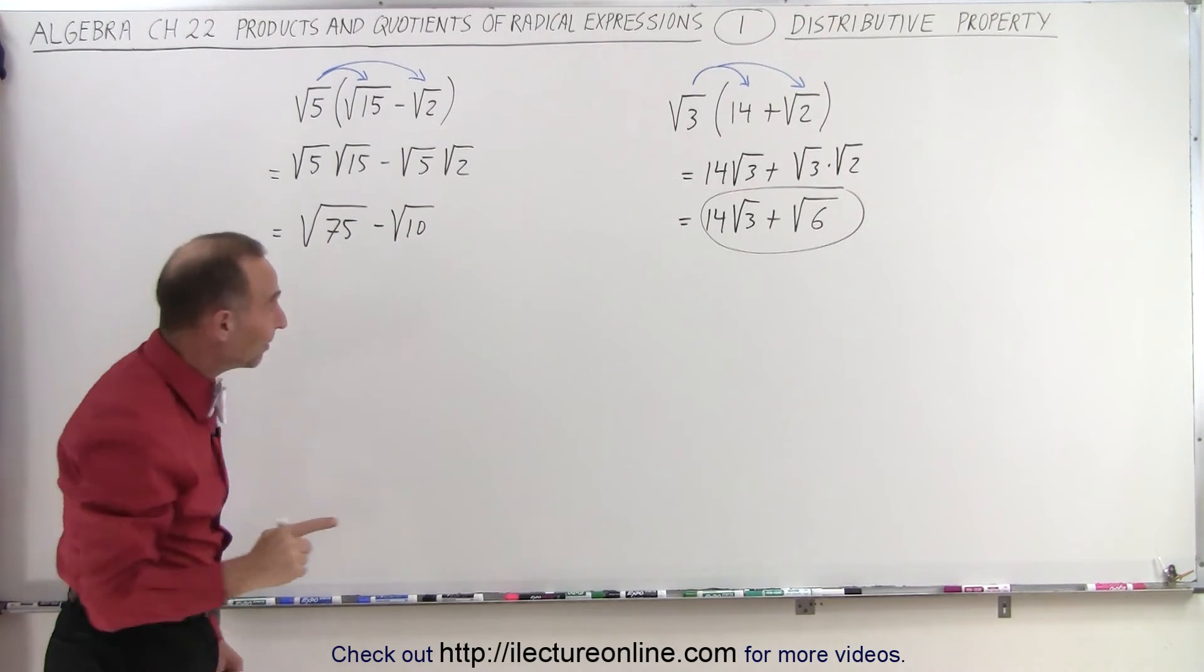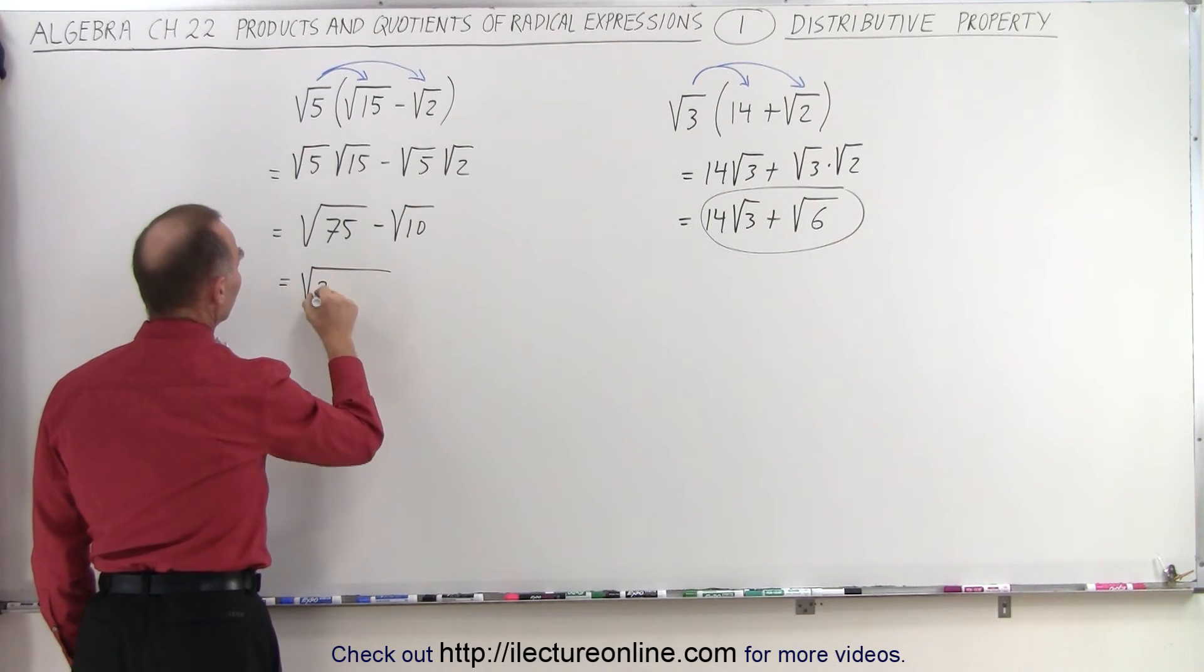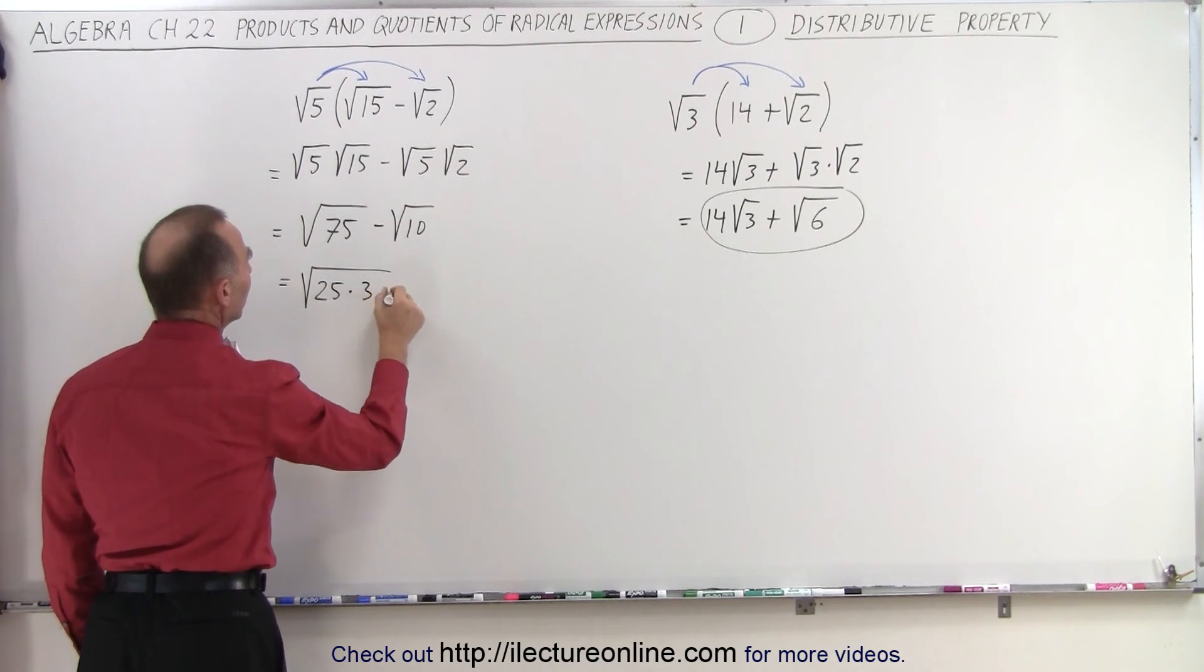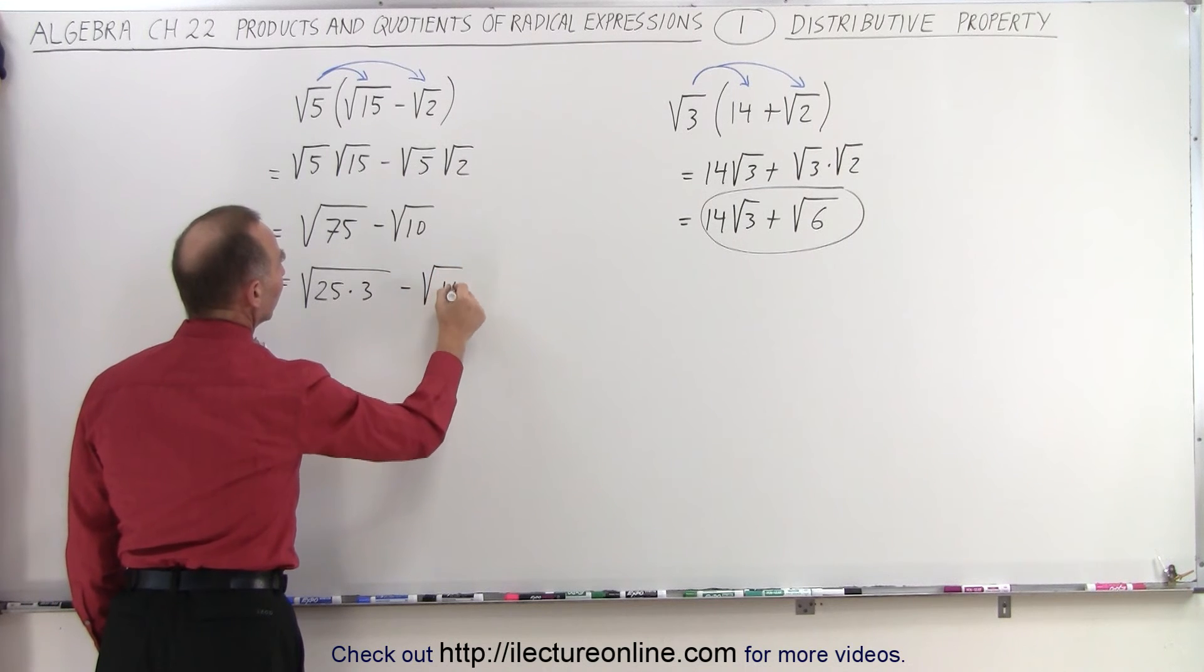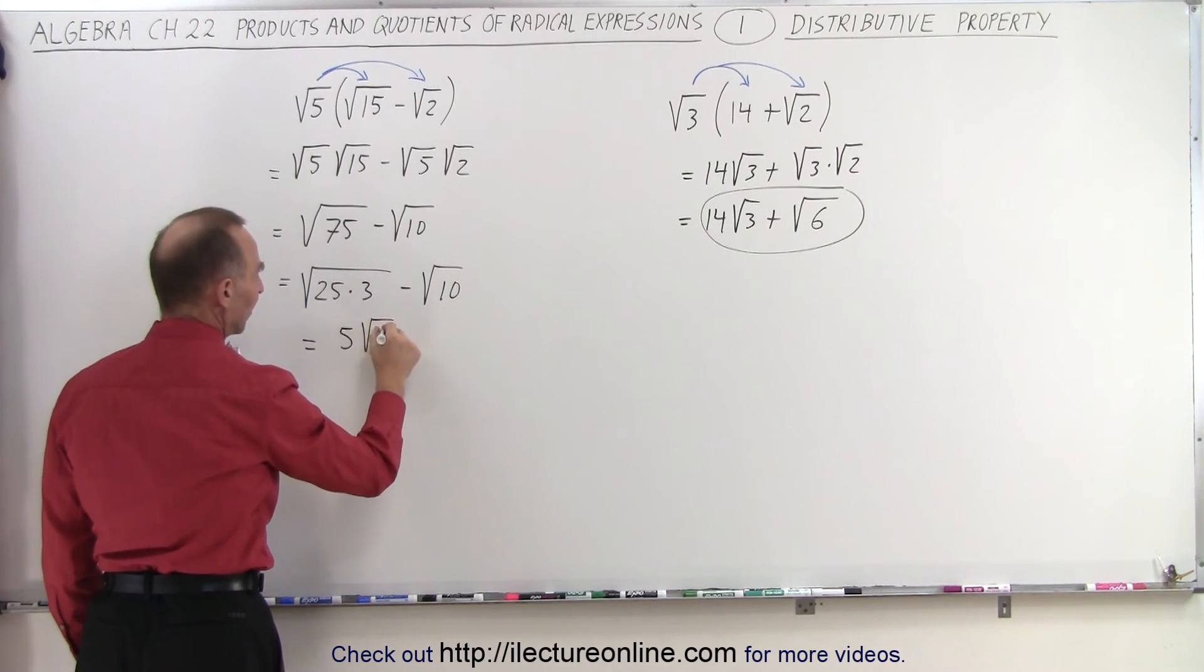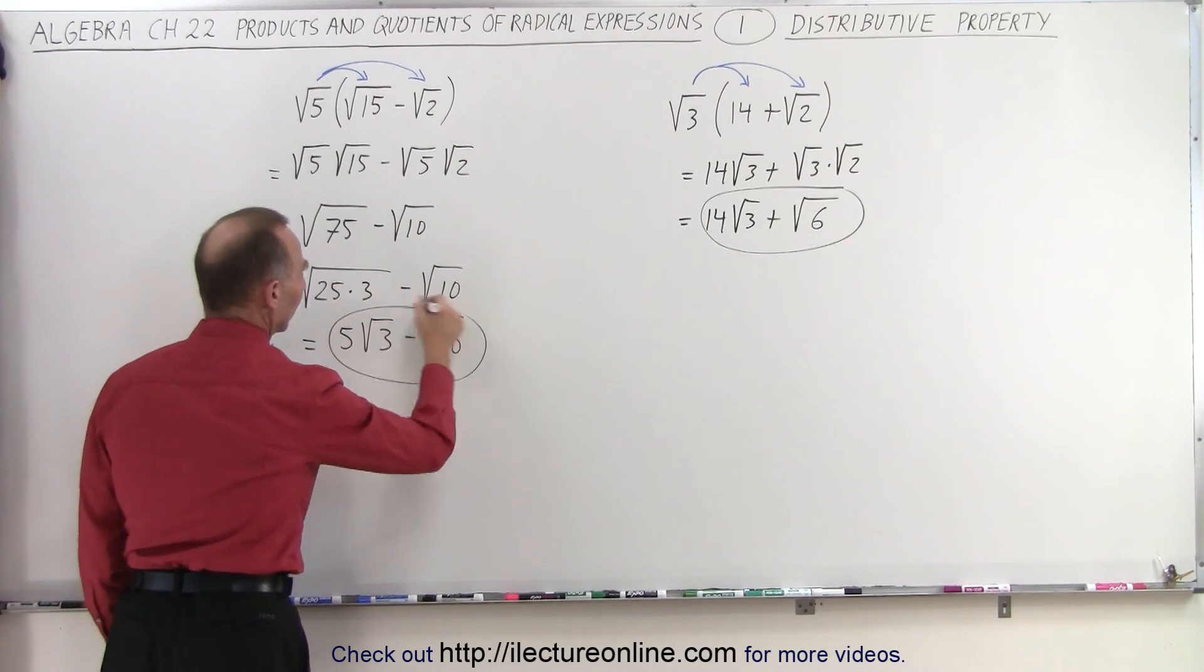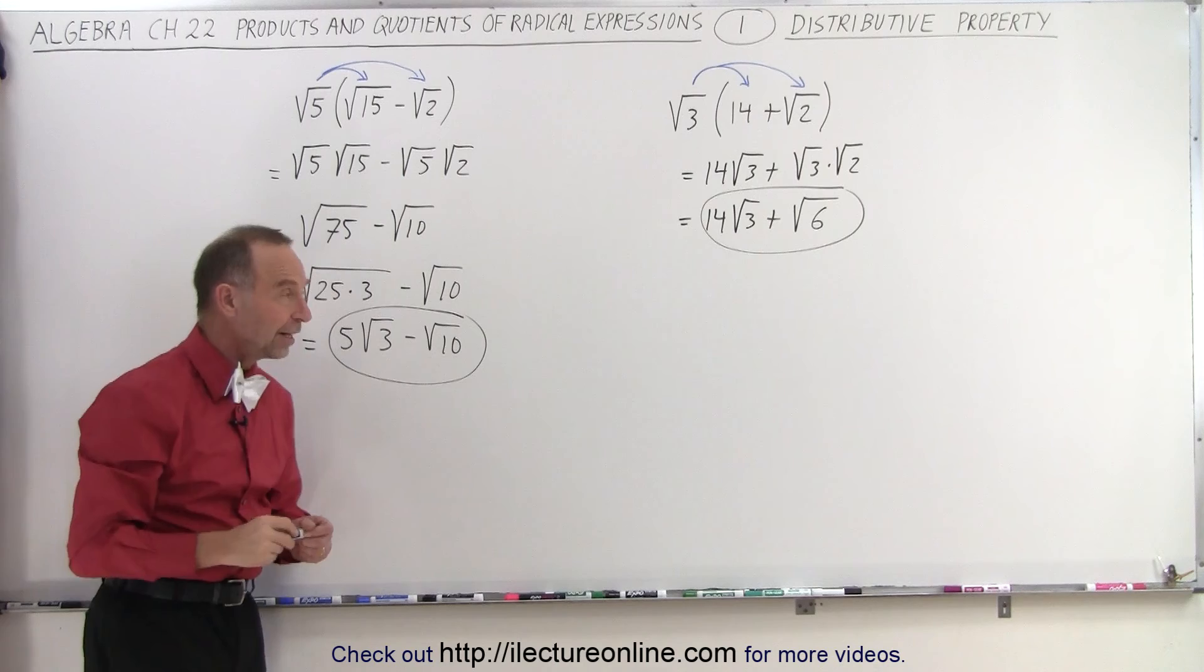And then we realize we can simplify this because this can be written as the square root of 25 times three minus the square root of 10. And of course the square root of 25 is five. So this is five times the square root of three minus the square root of 10. And that is the most simplified form of that expression.